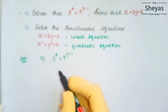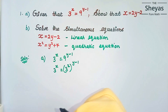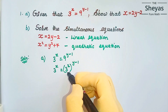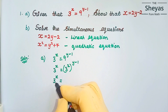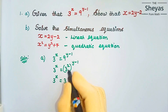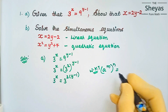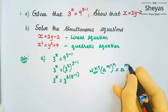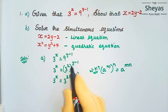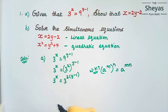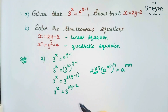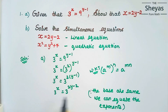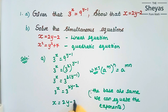Given that 3^x = 9^(y−1), we can write 9 as 3², so 3^x = (3²)^(y−1). Applying the formula (a^m)^n = a^(m×n), we get 3^x = 3^(2(y−1)), which equals 3^(2y−2). Since the bases are the same, we can equate the exponents: therefore x = 2y − 2.